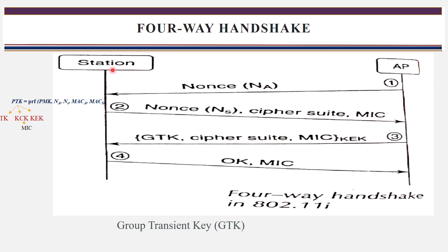After receiving, the station generates a second message containing: nonce of the station, cipher suite, and MIC — message integrity check. MIC is generated with the help of the KCK key. The KCK key is obtained from PTK. PTK is obtained by applying the pseudo random function to the message. After applying, you get PTK, and from PTK you get KCK, and with this key you generate the message integrity check.